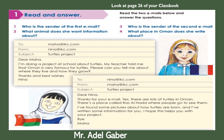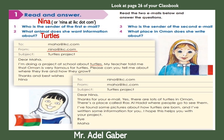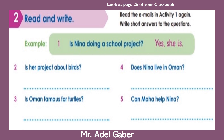Check your answers. Question one: who is the sender of the first email? Yes, Nina — Nina at IKC dot com. Question two: what animal does she want information about? Yes, about turtles. Question three: who is the sender of the second email? It is Maha at IKC dot com. Question four: what place in Oman does she write about? She wrote about Ras al-Had.